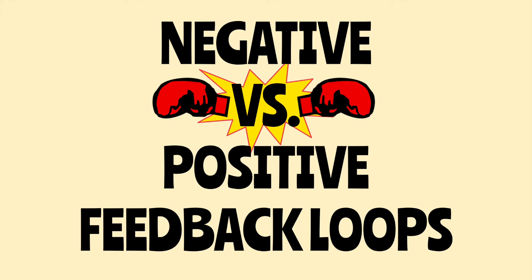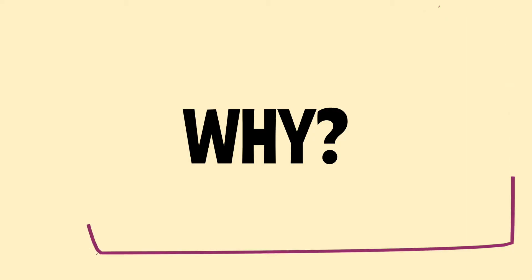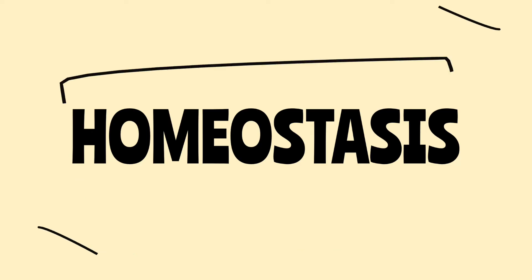Hey YouTube, I was asked to explain the difference between negative and positive feedback loops along with some examples. So let's just jump right in. The first step to knowing the difference between negative versus positive feedback loops is to understand why they occur. Why does our body go through these mechanisms of feedback loops? Well, I have one word that should answer your question: homeostasis.